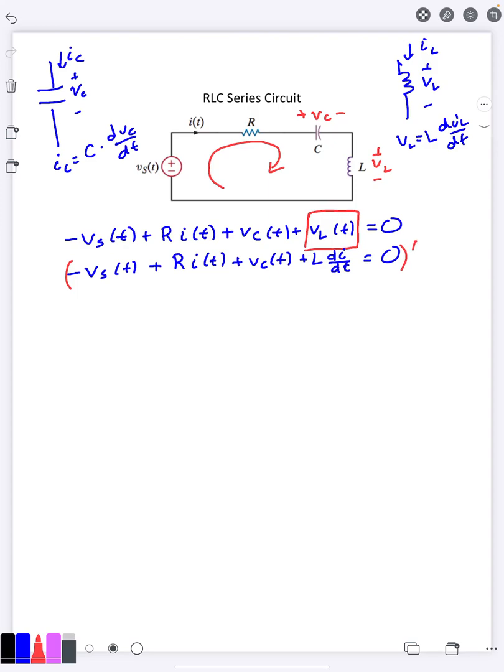So I'm going to take my whole equation here and take derivatives of both sides. Well then I would have the derivative of the source voltage. I'd have R times the derivative of the current plus the derivative of the voltage across the capacitor and then I already had derivatives, so it's going to be the second derivative of the current.